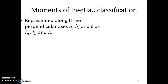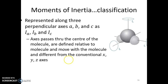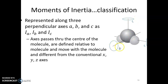The moment of inertia can be resolved along three mutually perpendicular axes a, b, and c. These axes coincide with the center of mass of the molecule. The moment of inertia along a is Ia, along b is Ib, and along c is Ic. The axes a, b, and c are different from the regular lab-frame axes x, y, and z.